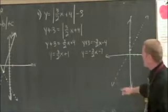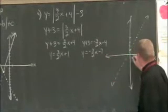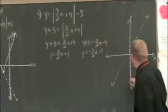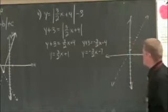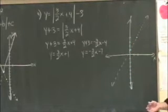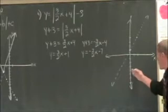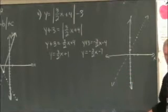Negative 3 halves x minus 7 has a y intercept at negative 7. So I go down 1, 2, 3, 4, 5, 6, 7, right there. Slope of negative 3 halves, you typically go down 3, right 2. But that's the same as going up 3, left 2, which is what I'm going to do now.